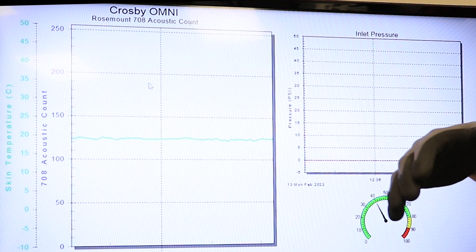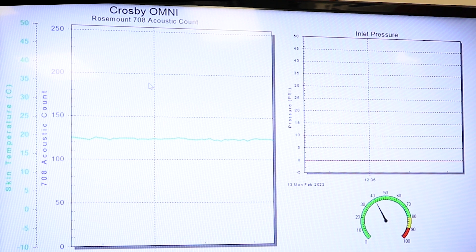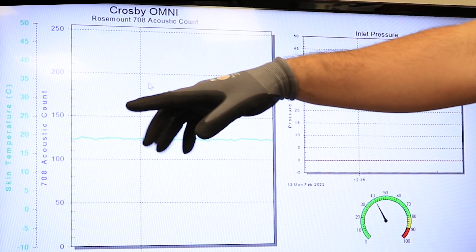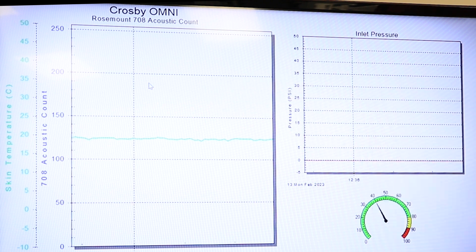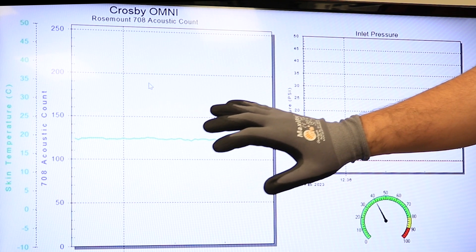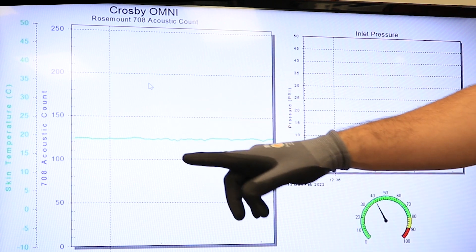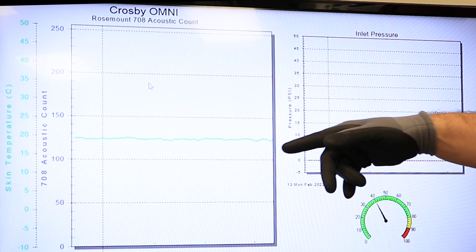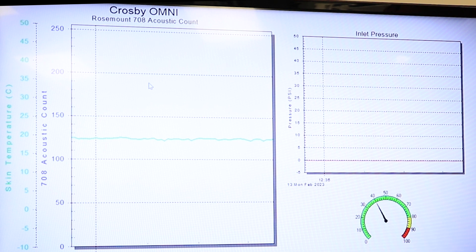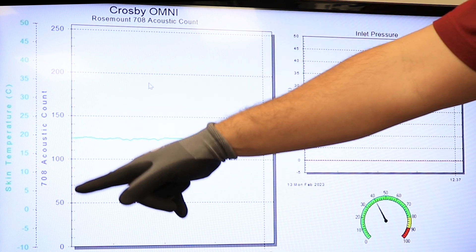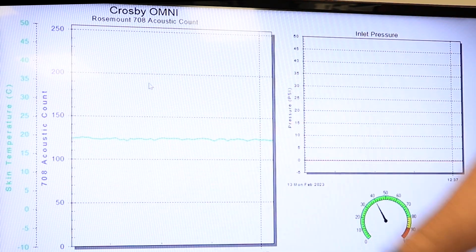This will indicate when there's acoustic turbulence at the outlet of the pipe. In green, we're graphing the skin pipe temperature also at the outlet piping of the PRV. For our demonstration, since we're using compressed air at ambient temperatures, there will not be a change in skin pipe temperature. But in the real world scenario, when we have a temperature or product that is hot or cold, we will see a rate of change accompanying the acoustic count change.